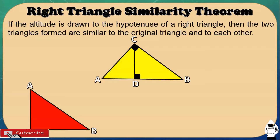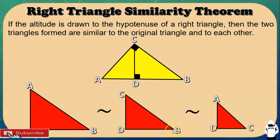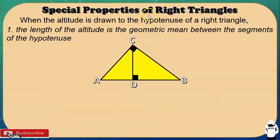So let's separate the three triangles. This is the original triangle ACB, then right triangle CDB, and then right triangle ADC. That's what we call the Right Triangle Similarity Theorem.